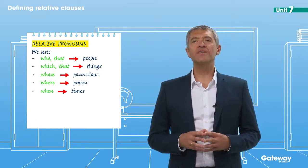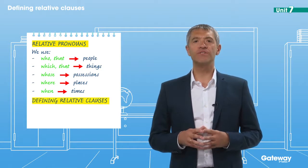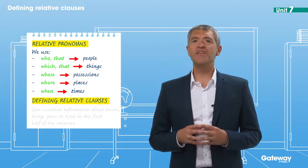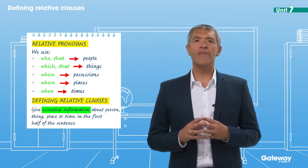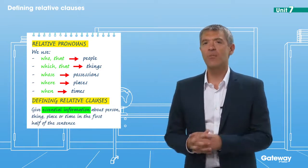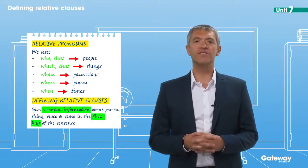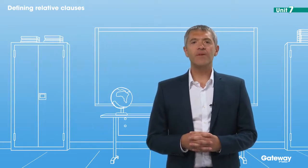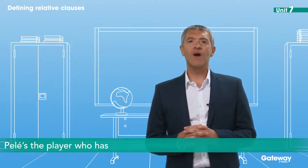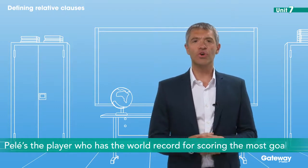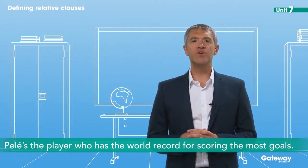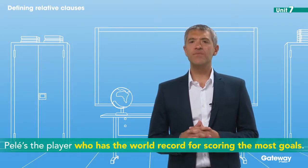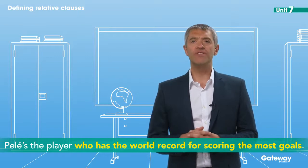All of the sentences we've looked at contain defining relative clauses. We call them defining relative clauses because they give essential information about the person, thing, place or time in the first half of the sentence. So, for example, when we say 'Pelé is the player who has the world record for scoring the most goals,' the relative clause defines which player we're talking about. The sentence doesn't make much sense without the relative clause.